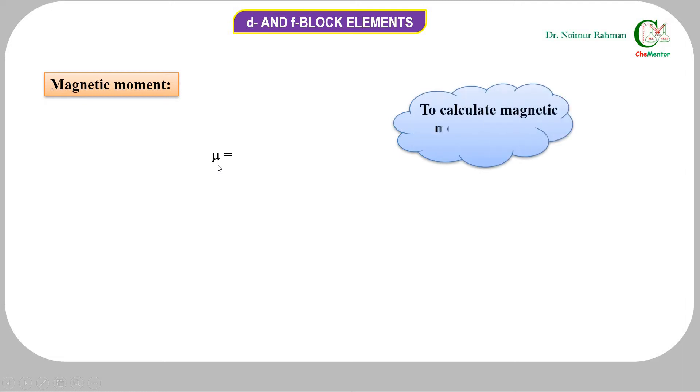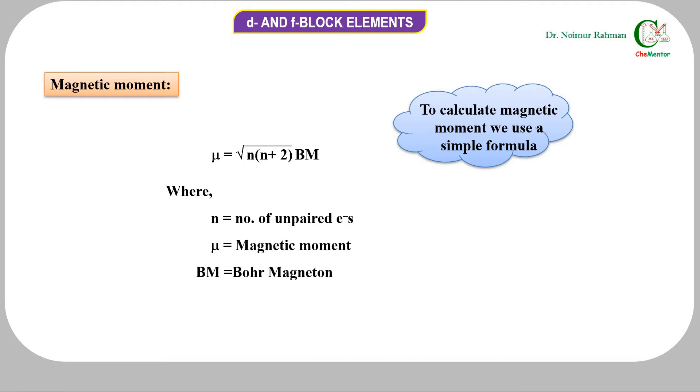Magnetic moment is denoted by the symbol μ and is calculated using a very simple formula: √(n(n+2)), where n is the number of unpaired electrons, μ is magnetic moment, and BM is the unit that stands for Bohr magnetron.